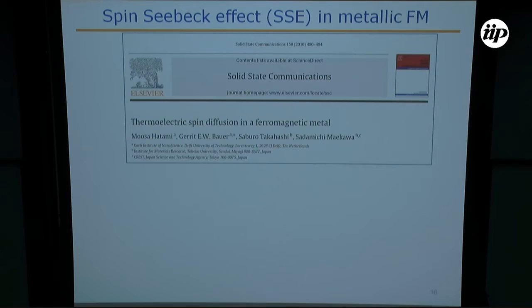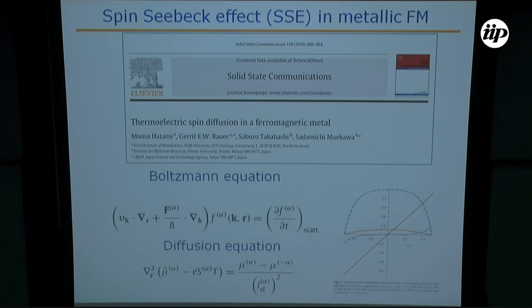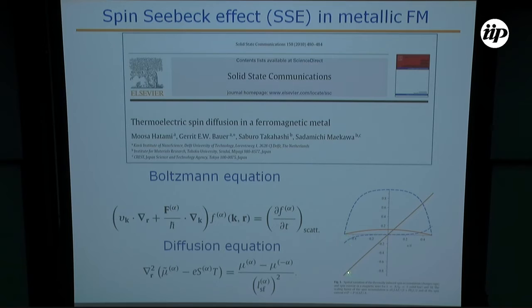The theoretical explanation came out in a paper by Hatami and Gerrit Bauer in a special number of Solid State Communications on spintronics. They treat the electron distribution function with spin up or down. The effect of the temperature gradient on the chemical potential is obtained by the Boltzmann equation. It also shows that spin accumulation satisfies a diffusion equation, and they obtain the spin accumulation and the spin current. This depends on the length scale of the sample and the spin flip diffusion length.